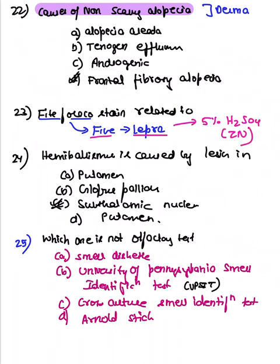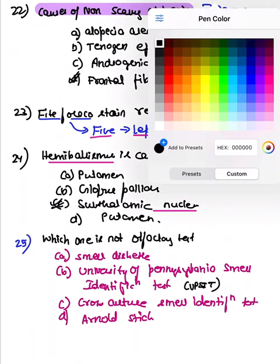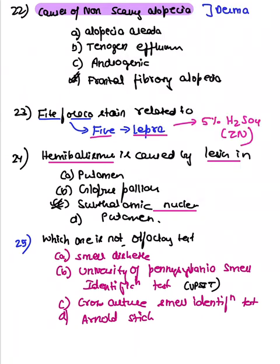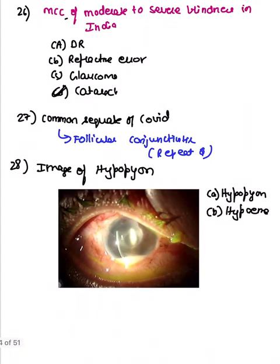Hemiballismus is caused by a lesion in the subthalamic nucleus. The next question asked which test is not an olfactory test — the exact answer is uncertain from the available recall.